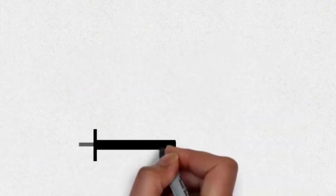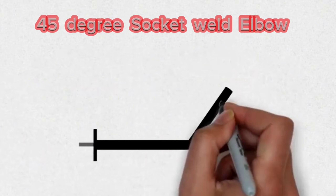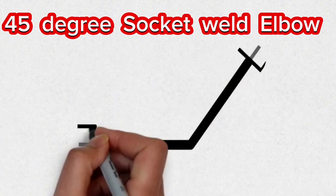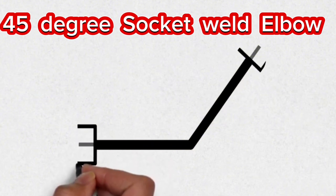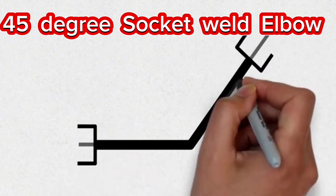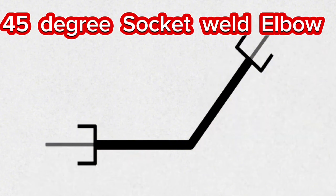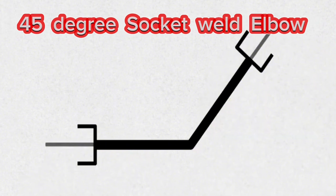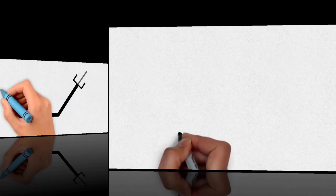This symbol, which is used in pipe isometrics, is the isometric symbol of the 45-degree socket weld elbow. These 45-degree elbow symbols are used in socket weld pipeline isometrics.